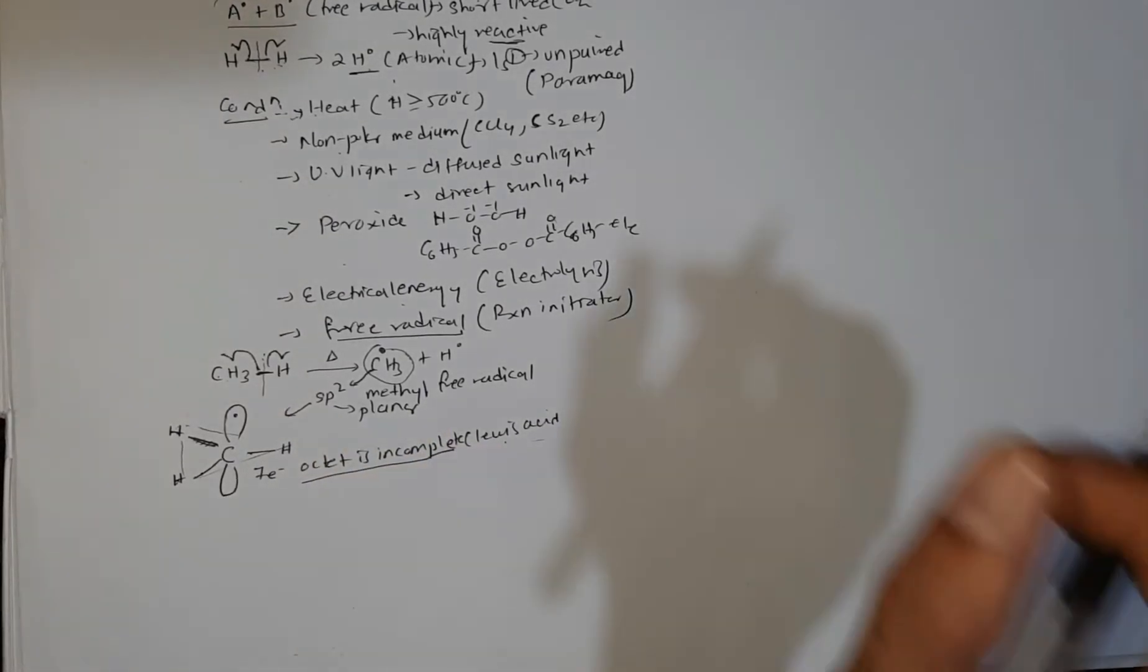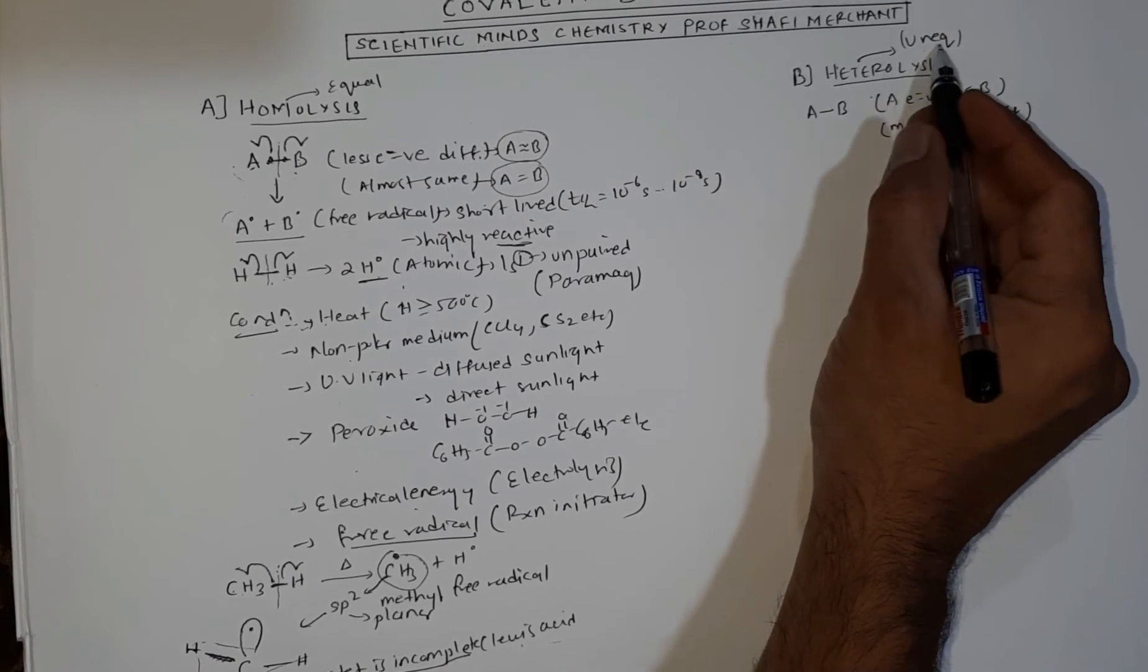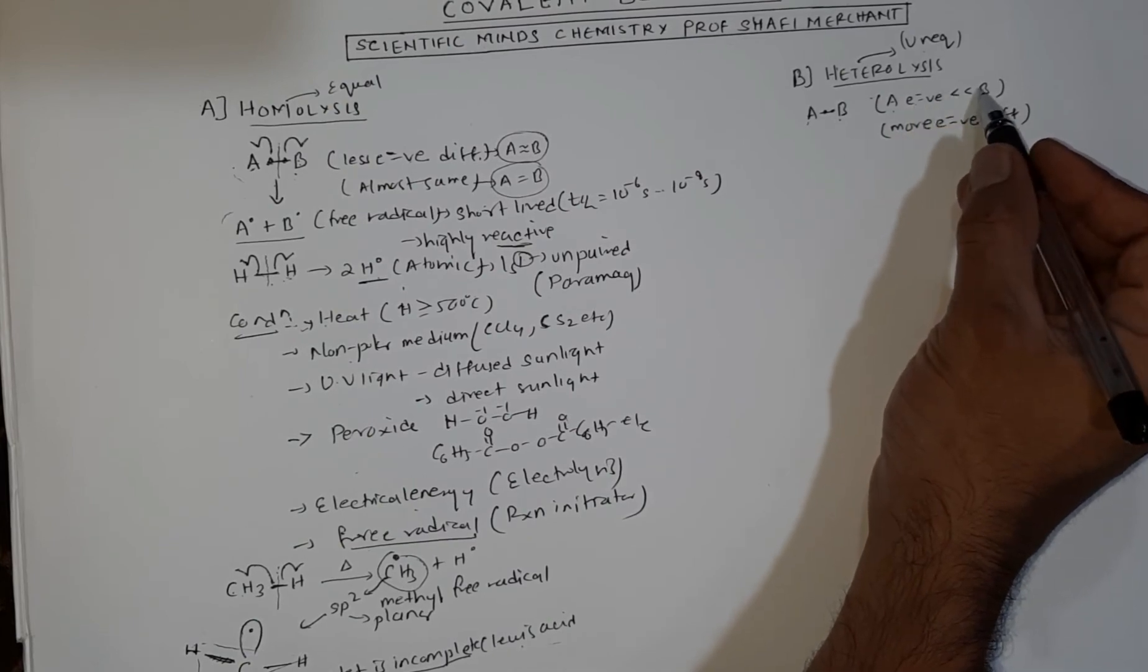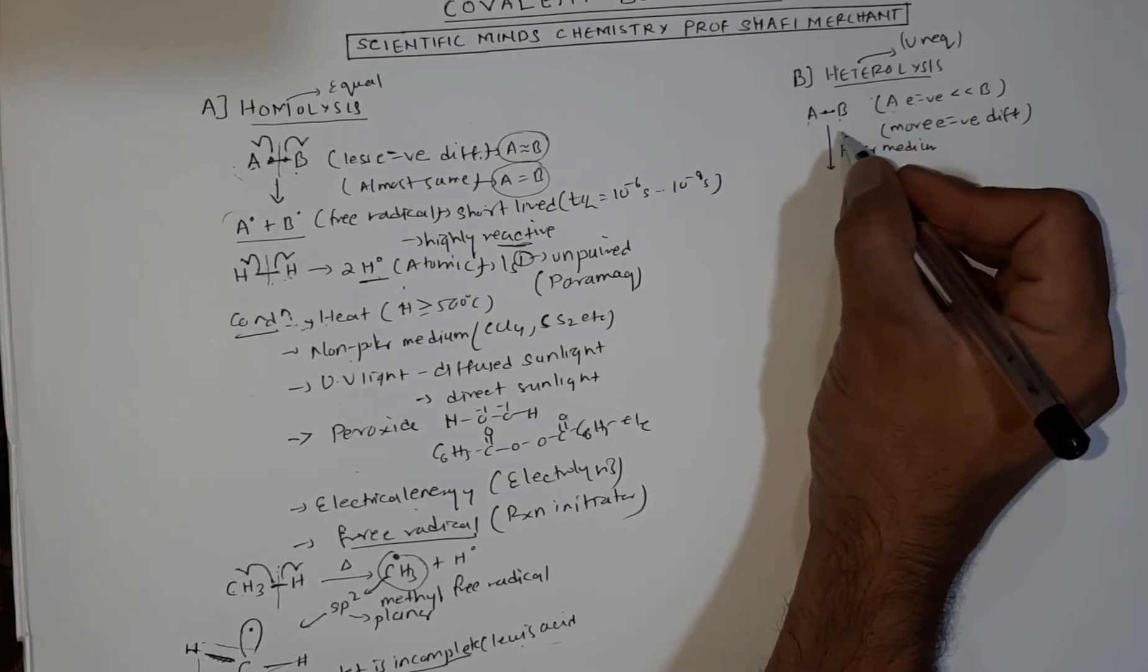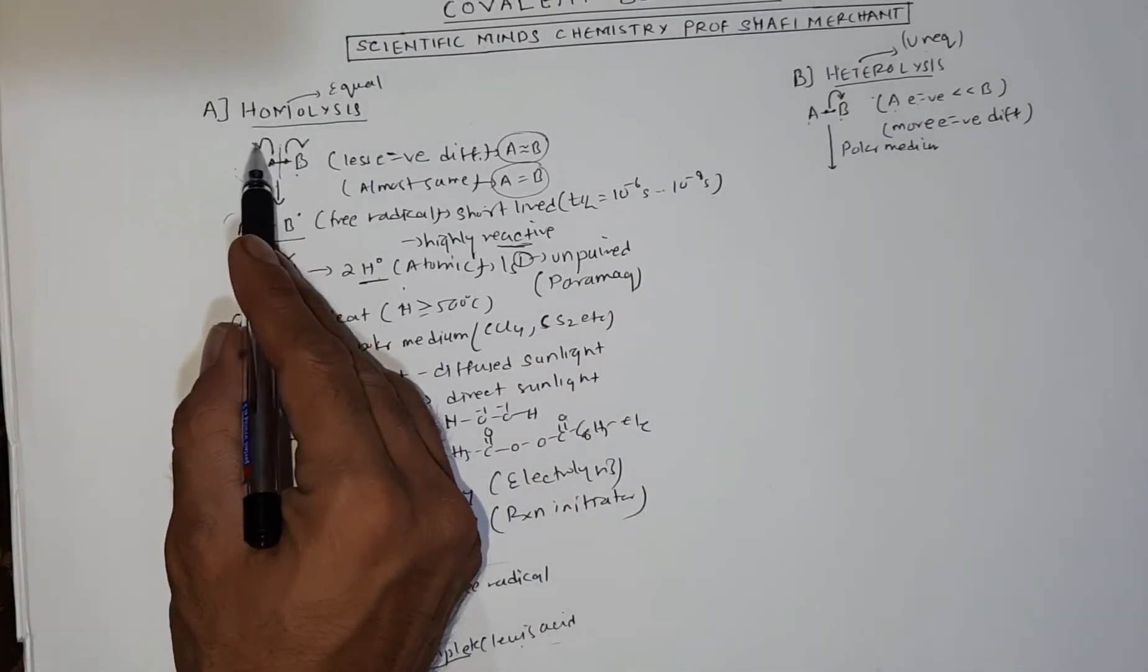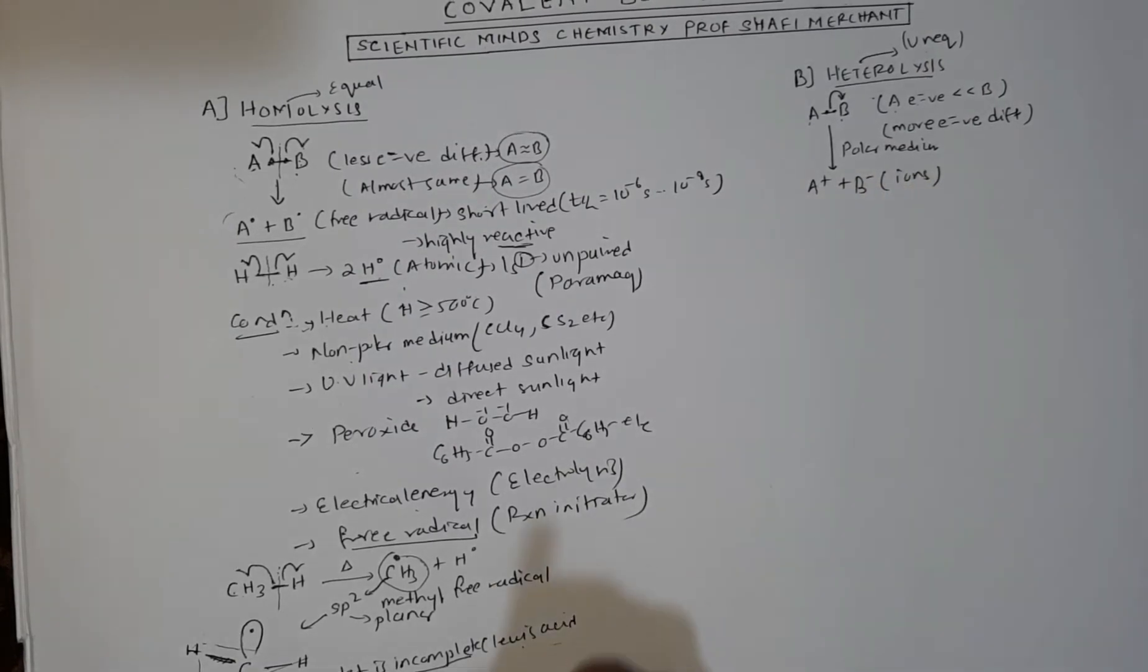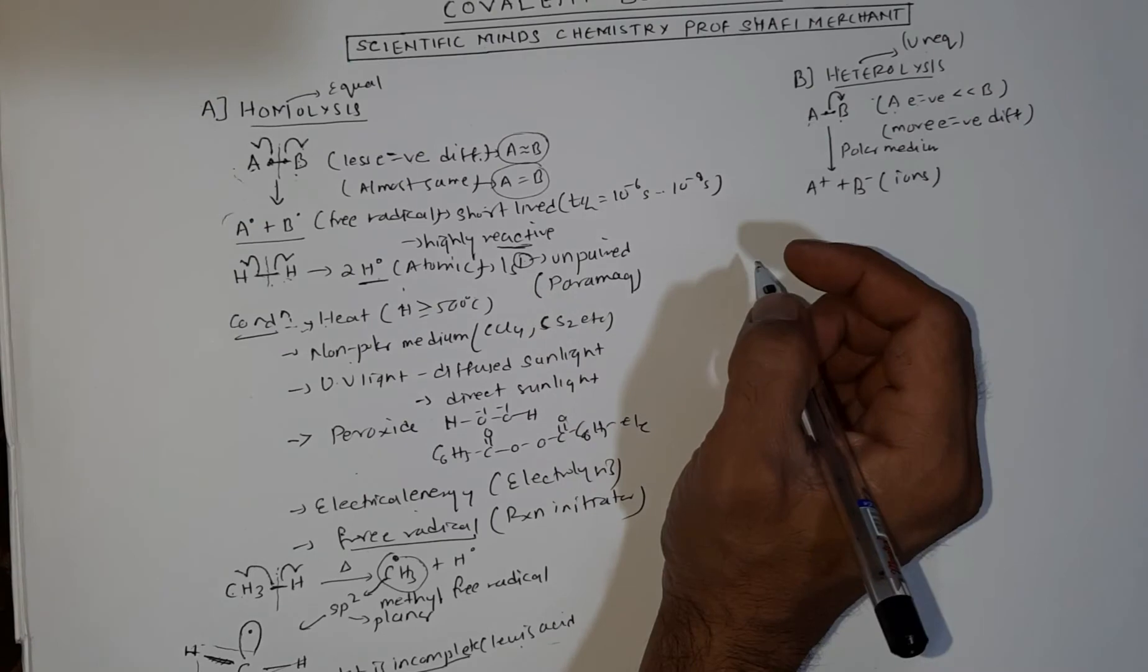Now let's talk about heterolysis. In heterolysis, hetero means unequal breaking. Suppose A and B where A has very less electronegativity compared to B. If you add AB into a polar medium, here polar media is essential because unequal breaking will occur. The entire pair of electrons shifts to B. In homolysis I drew half arrows meaning one electron each, but here the entire pair shifts with a complete arrow. This results in A+ and B-, meaning ions are formed - cation and anion. For heterolysis, polar media should be present.